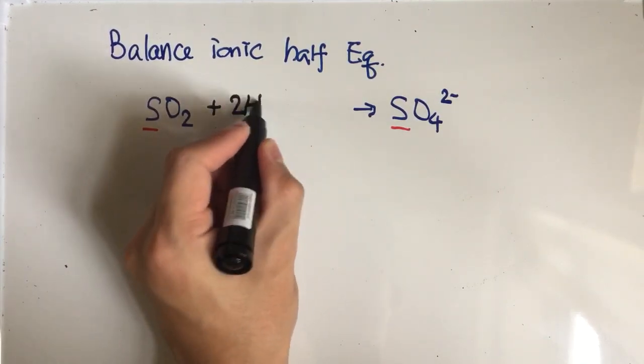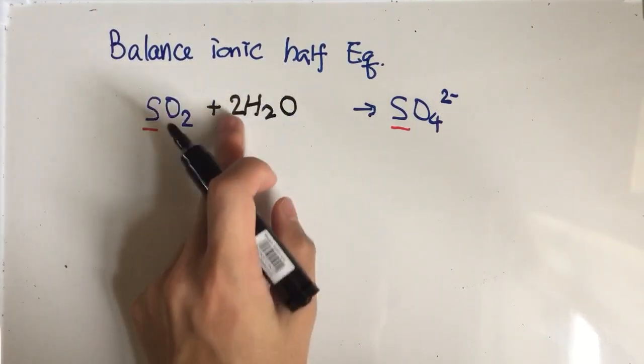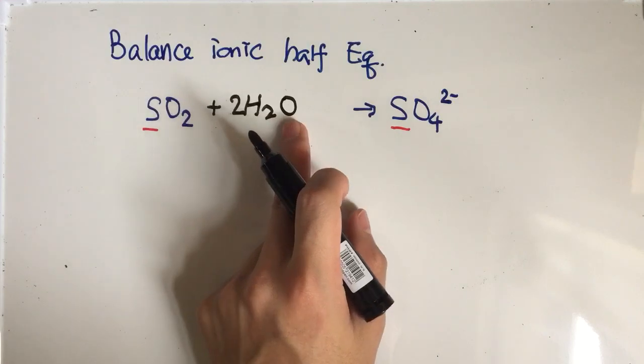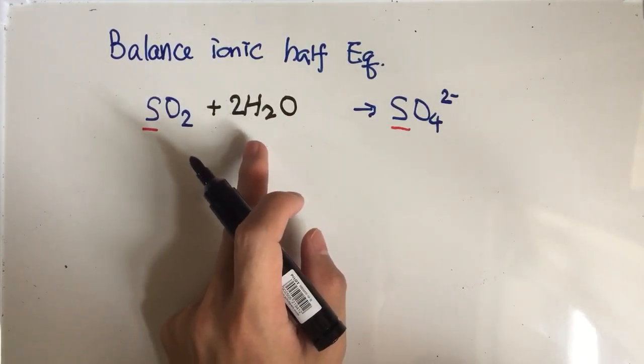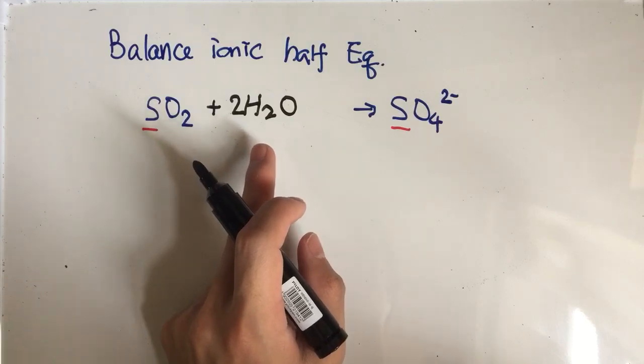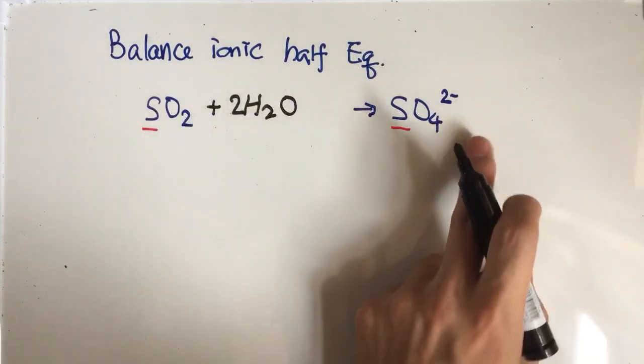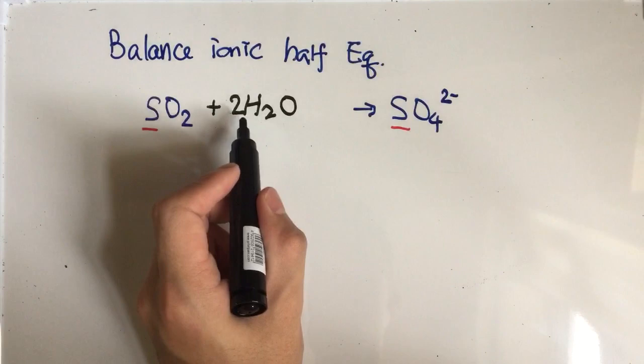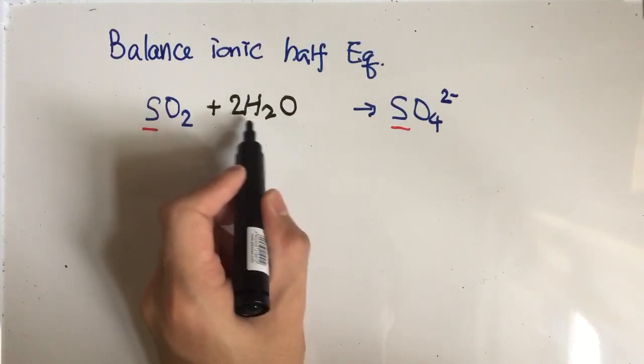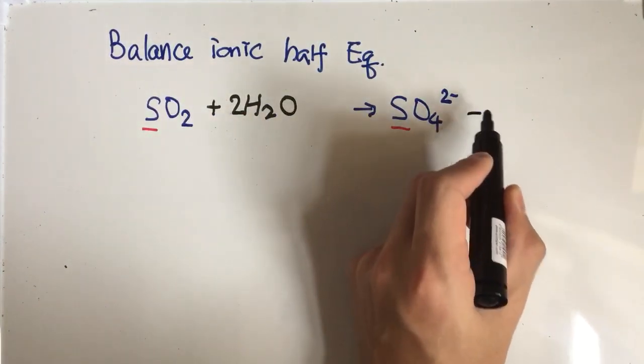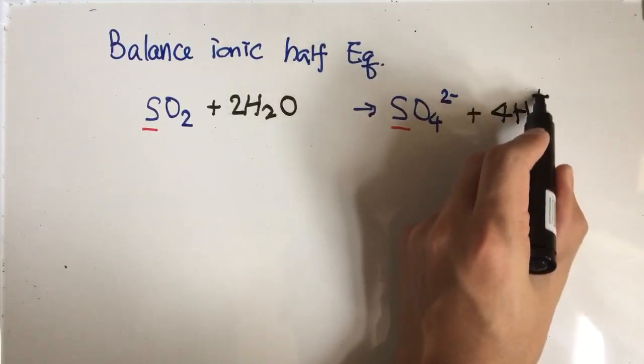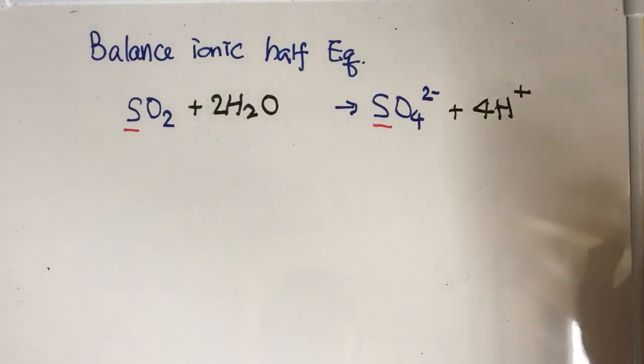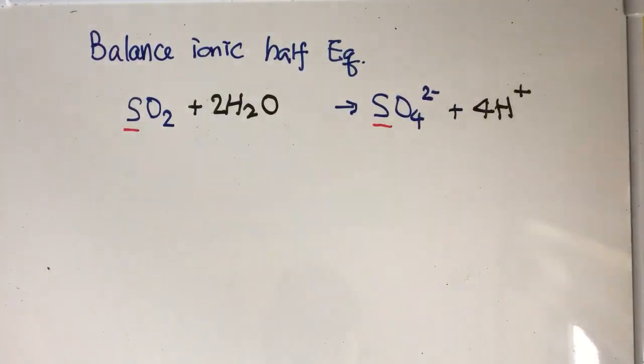2H2O here actually has two oxygen. But after you add the water, you have to balance the hydrogen by adding hydrogen ions on the product side. Here you have four hydrogen, and hence you have to add four hydrogen ions (4H+).